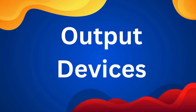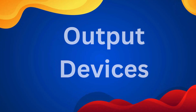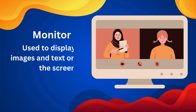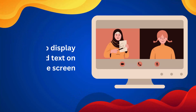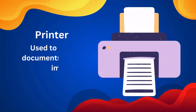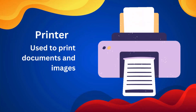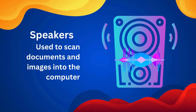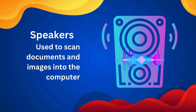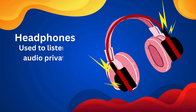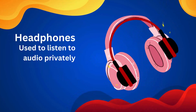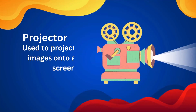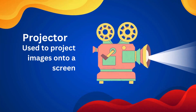Output devices. Monitor: used to display images and text on the screen. Printer: used to print documents and images. Speakers: used to play audio. Headphones: used to listen to audio privately. Projector: used to project images onto a screen.